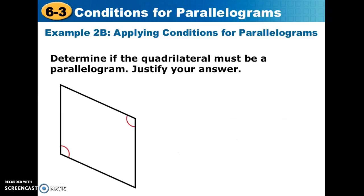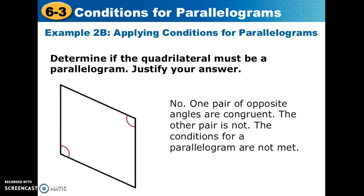In the next case, we have two congruent angles but no information on the other pair. Sadly, we are not able to conclude that this is a parallelogram. It looks like one, but we can't prove it — we cannot justify it, so we cannot make that conclusion.